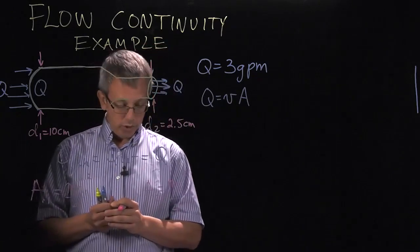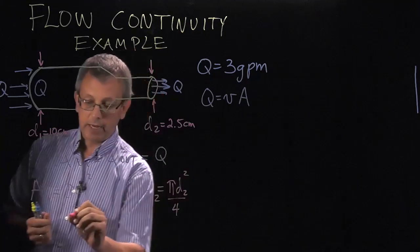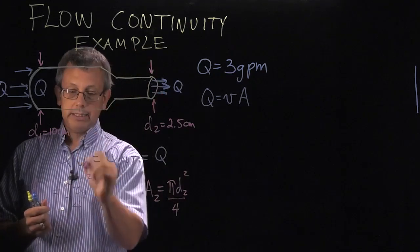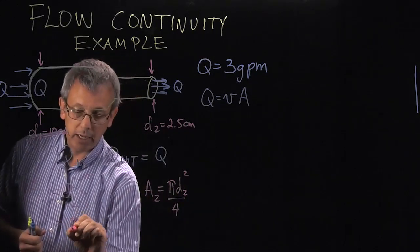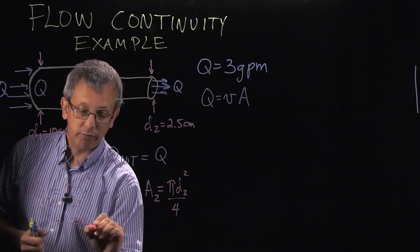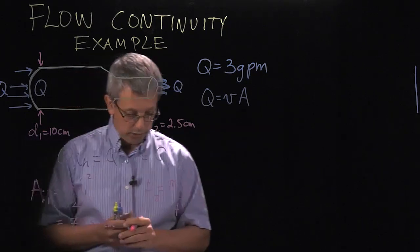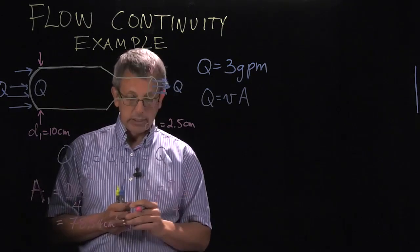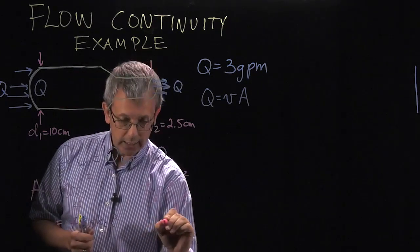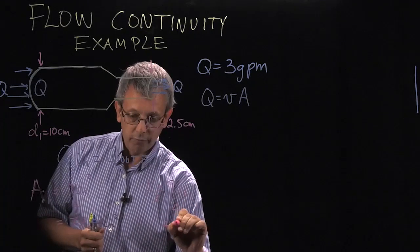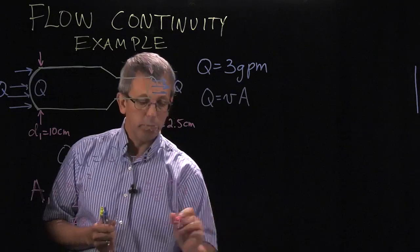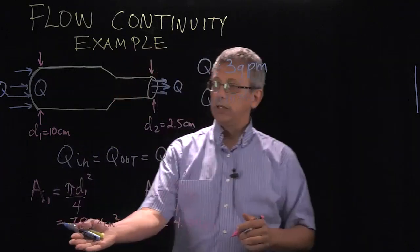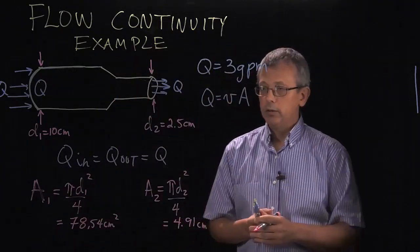So if we do that, we get values of, we plug in the 10 centimeters here or 5 centimeters squared and we get a value of 78.54 square centimeters. And over here if we do similar, we get an area of 4.91 square centimeters. Notice a substantial reduction in the area between the two.